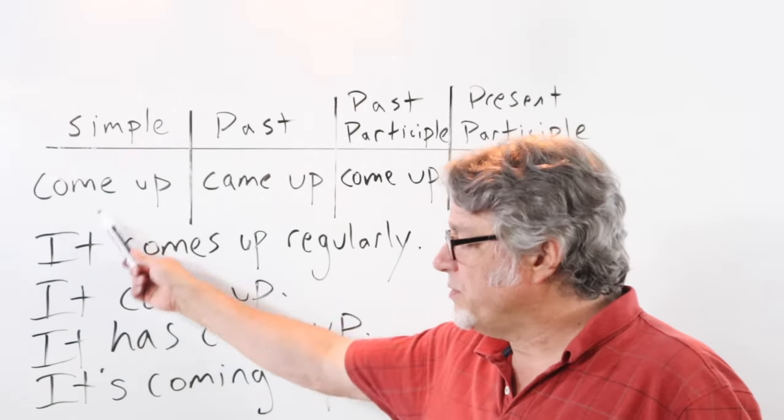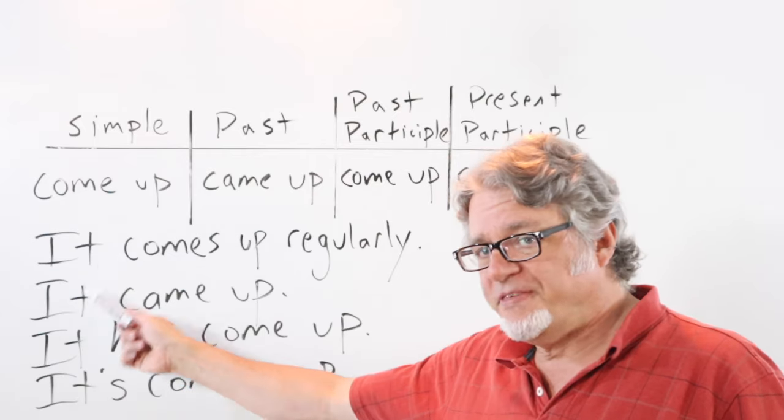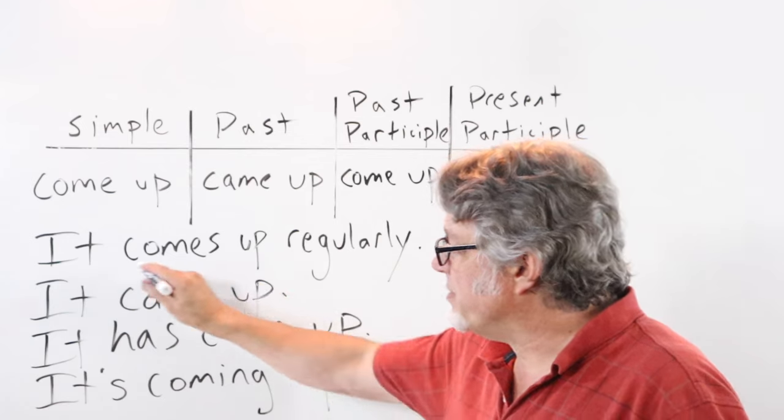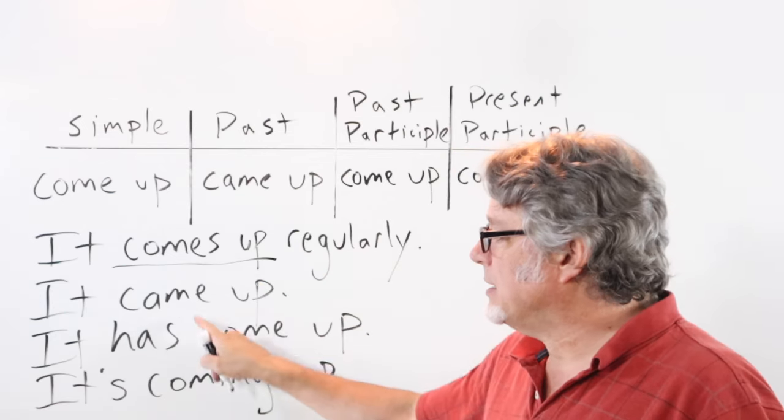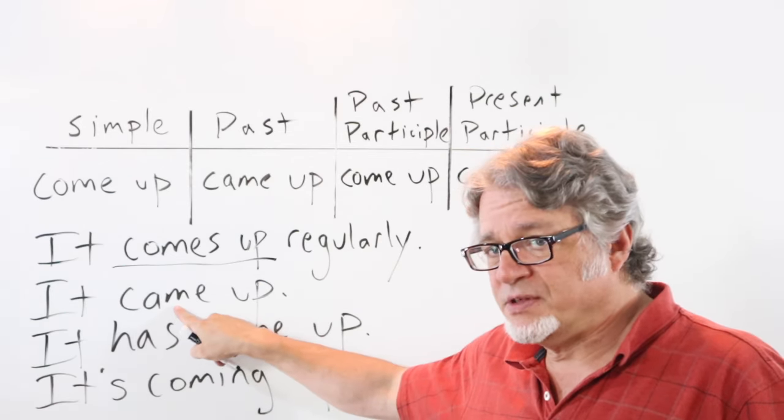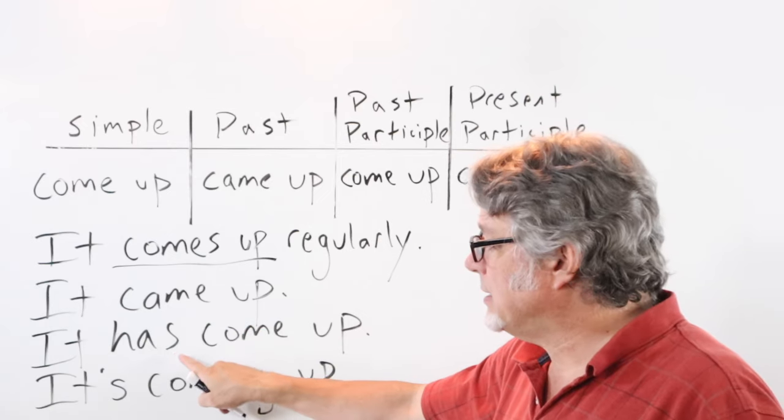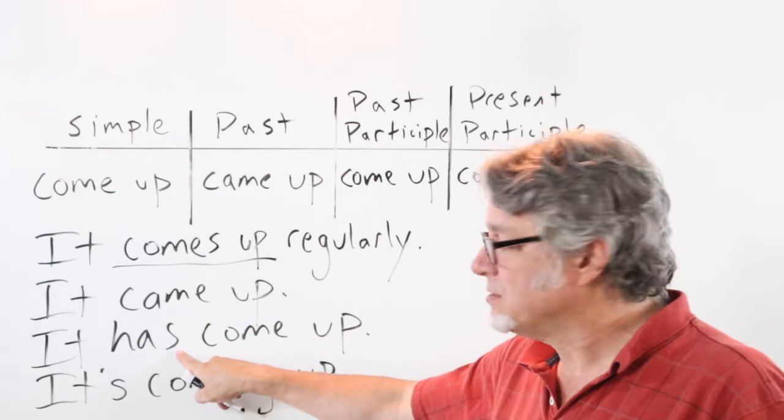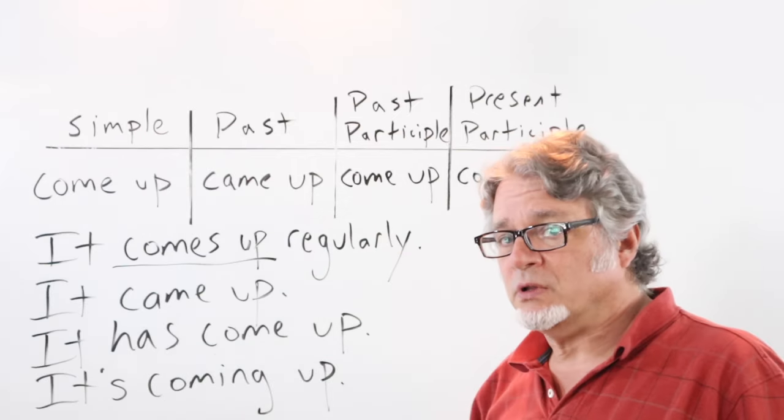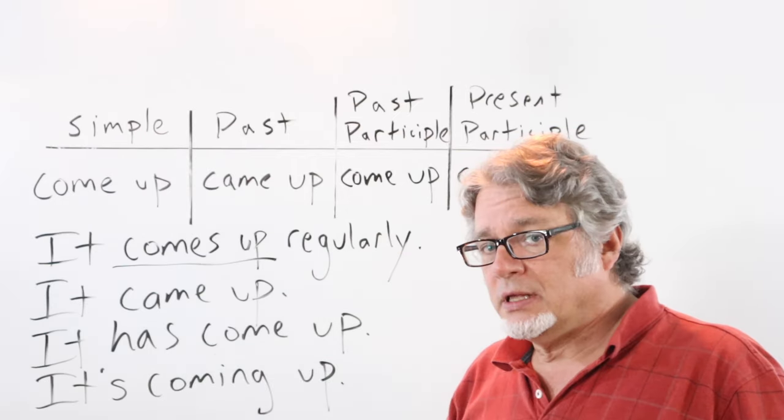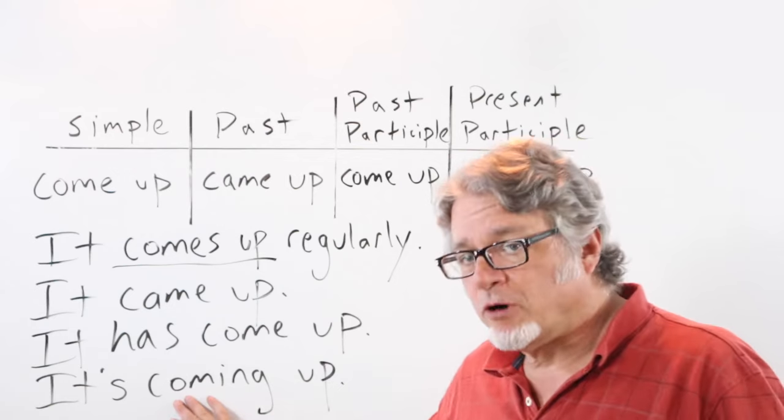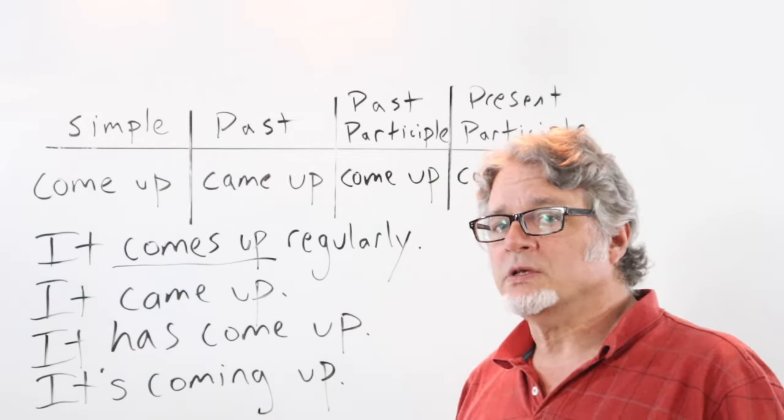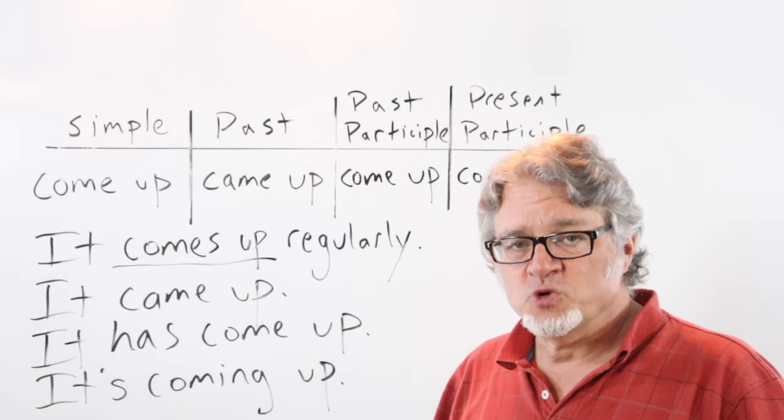For all of these sentences I've chosen the pronoun it. It comes up regularly. This is in the present tense. It came up. This is in the past tense. It has come up. This is in the present perfect tense using the past participle. It's coming up. This is in the present continuous tense. This is a sentence you'll hear when someone is talking about a future event.